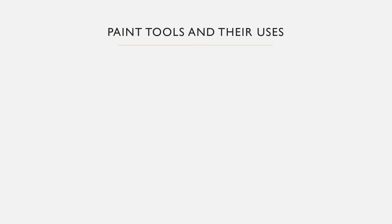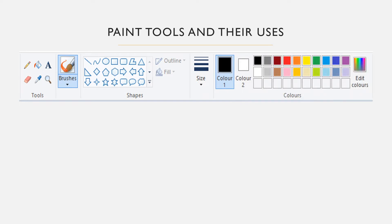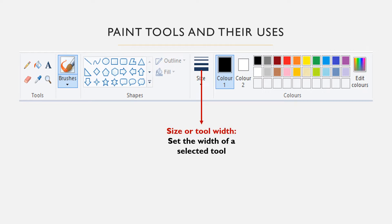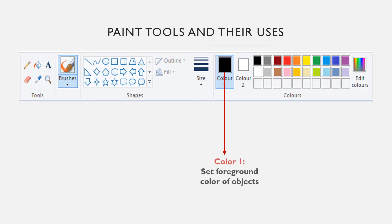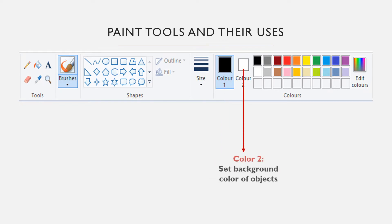Let us look at each of the tools of Microsoft Paint and how to use them. The first one is the tool width or size, which is used to set the width of a selected tool, for example the eraser, a line, or a curve. Color 1 is used for the foreground color of objects — click this tool and select a color from the palette before drawing an object. It is usually used by the pencil tool, brushes, and the outline of a shape. Color 2 is used for the background color of shapes — you can click this tool and select a color palette to set the background of an object. It is usually used by the eraser tool and the shape fill tool.